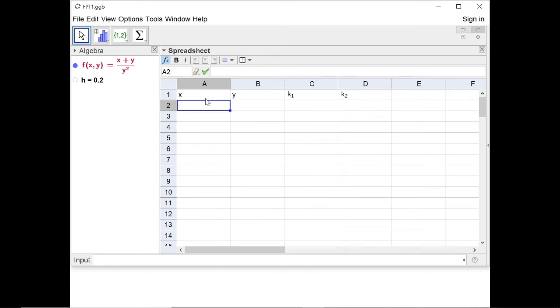So my initial value of x is 0. So in cell A2, I'm going to put 0. And then my initial value for y is 1, so I'm going to put 1 in cell B2.